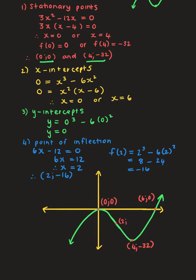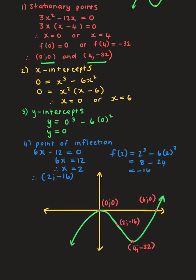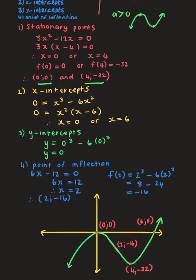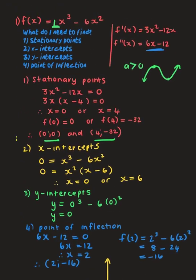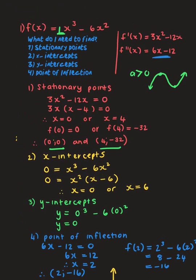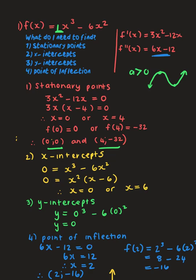Labelling all coordinates: origin (0,0) as stationary point and x/y-intercept; turning point (4,-32); x-intercept (6,0); point of inflection (2,-16). Notice how the point of inflection is halfway between the two turning points. That's our first graph done!